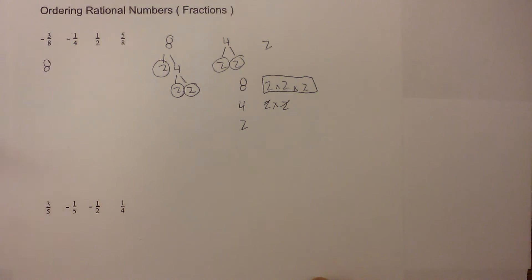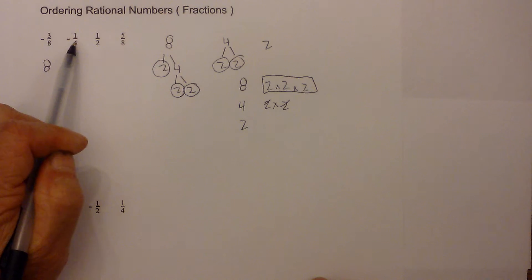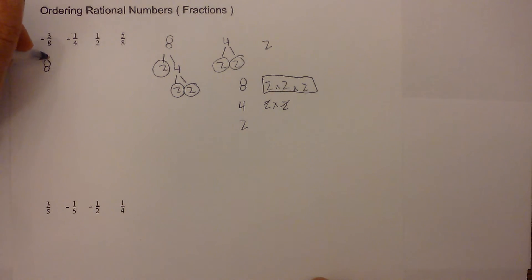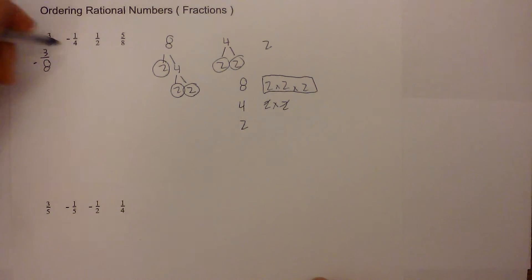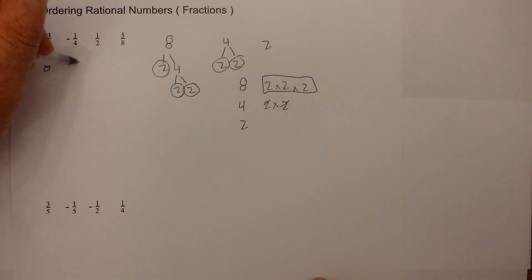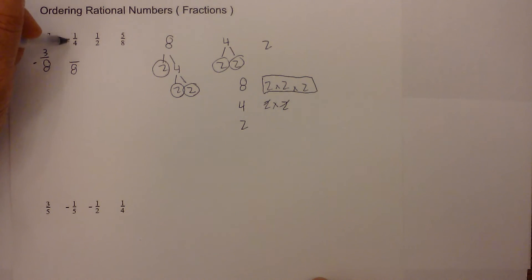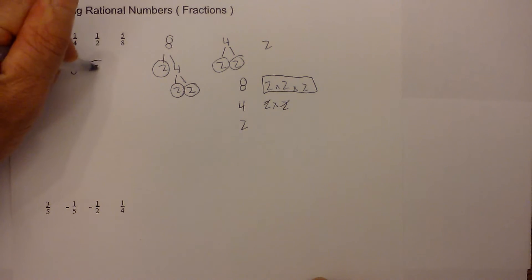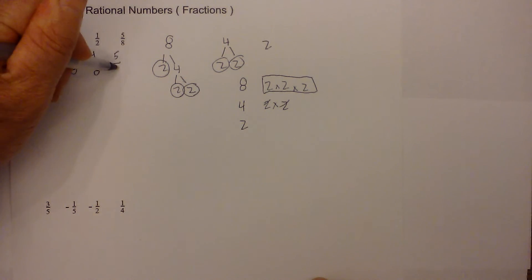Now that we have the common denominator, we can convert them all. Negative three eighths is already set up, so it stays as negative three eighths. One fourth — four goes into eight two times, so two times one is two — giving us negative two eighths. Two goes into eight four times, so four times one is four — giving us four eighths. And then we have five eighths.